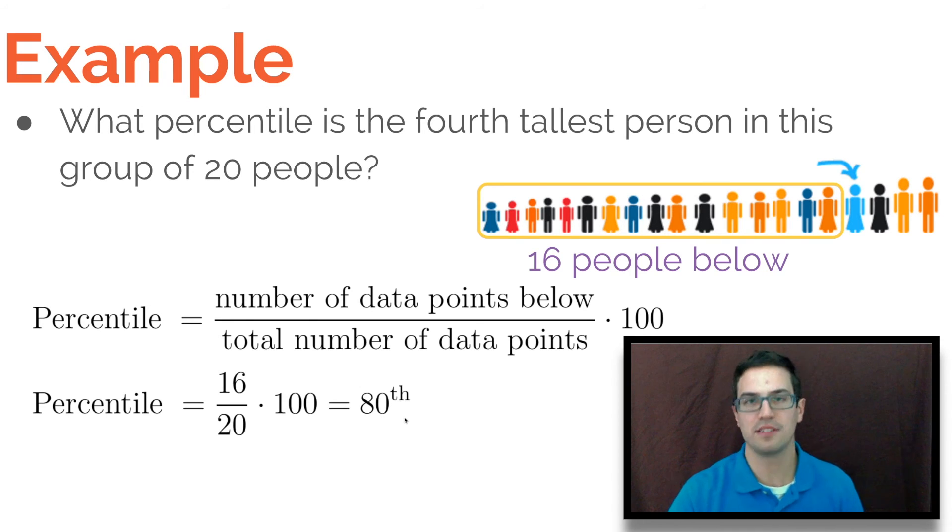Percentile is always described this way. It's not 80%. You would say it's in the 80th percentile. So to answer this question, you would say that the fourth tallest person is in the 80th percentile.